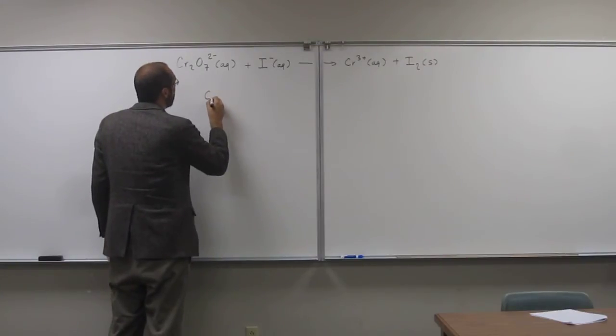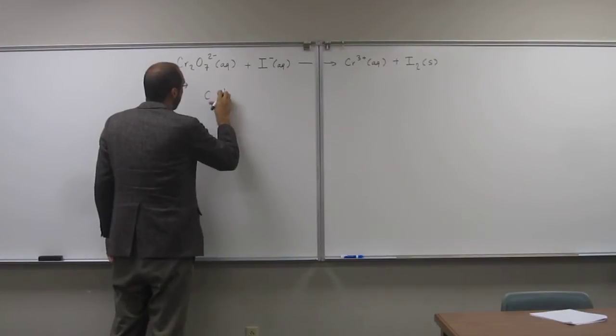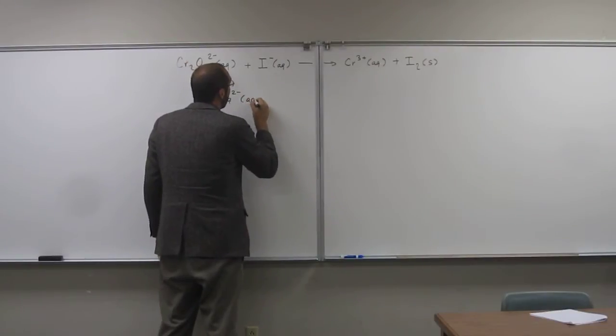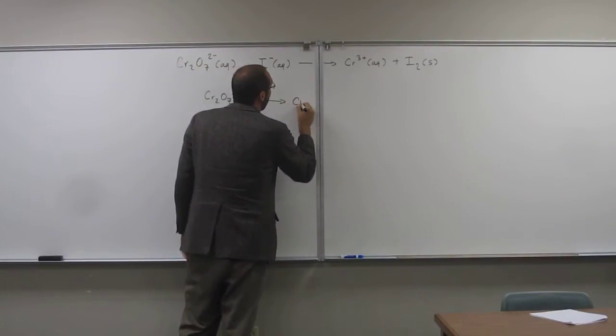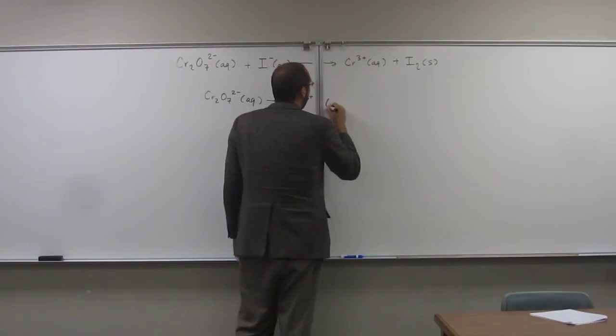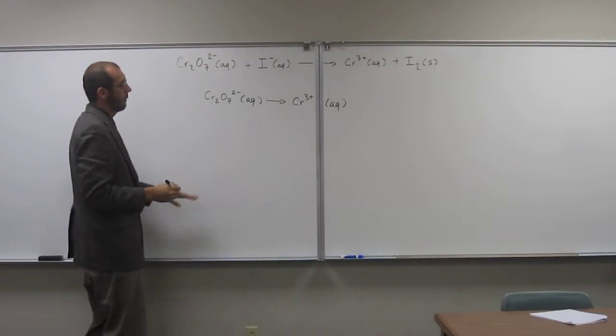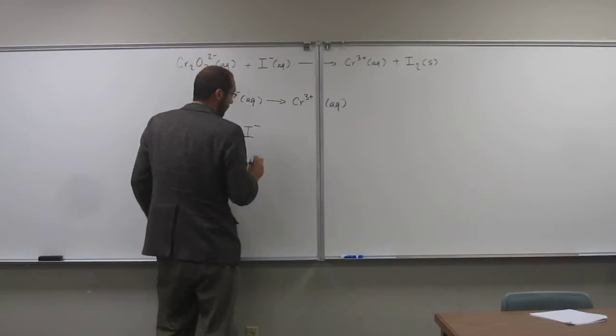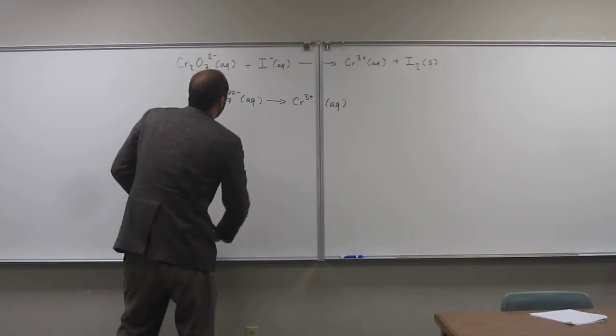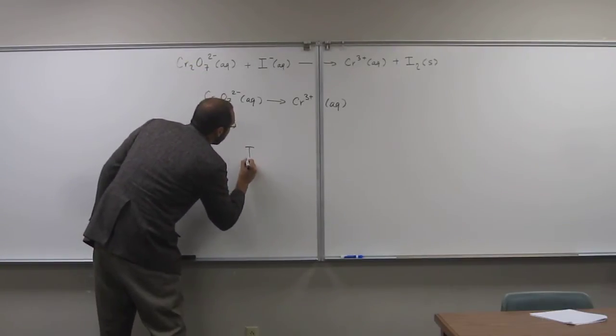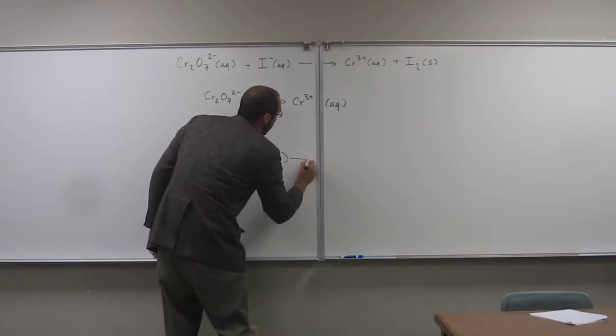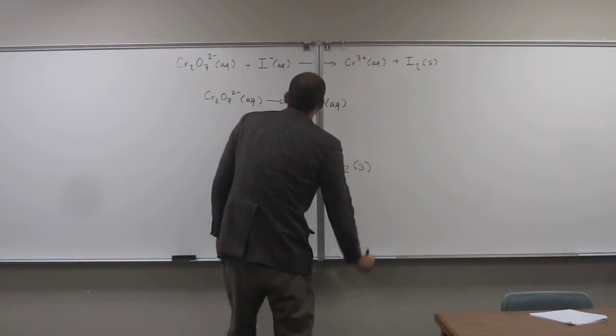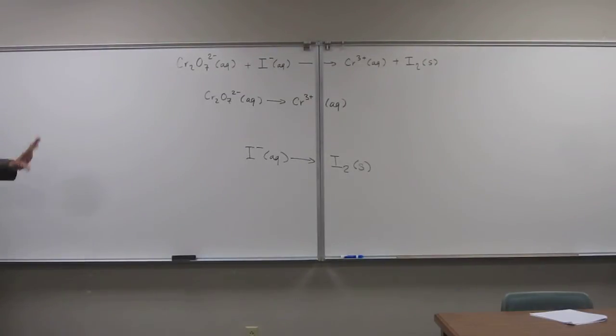So let's break those two up. CR2O7, like that. So that's one of them. And then, of course, the other one would be I minus. Let's actually write it down a little bit lower. So I minus aqueous goes to I2. So let's label one of these as reduction and the other one oxidation.